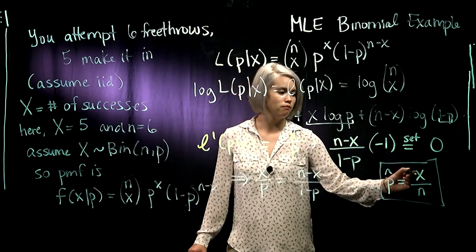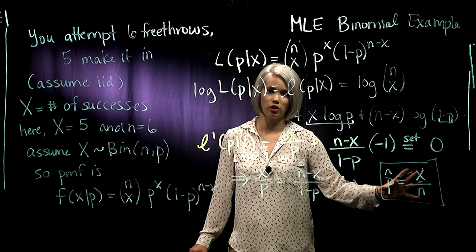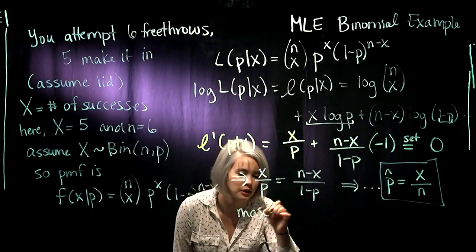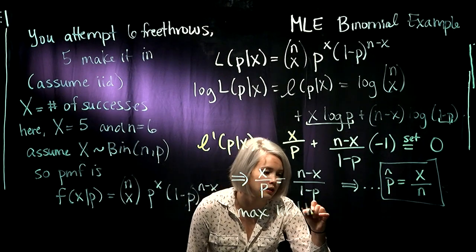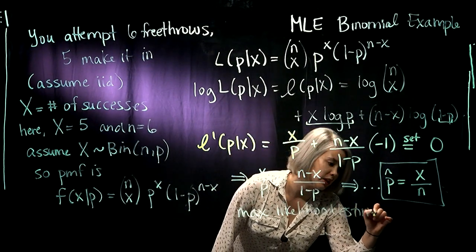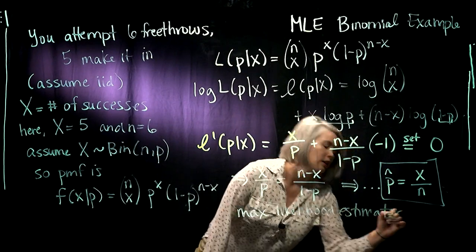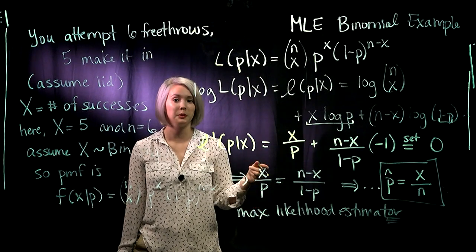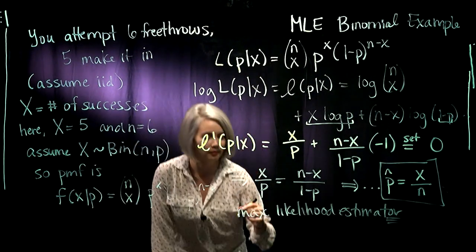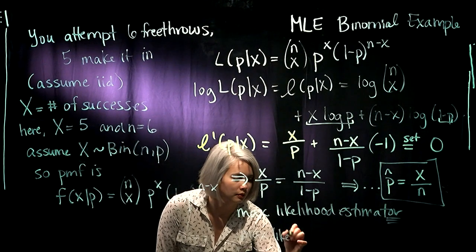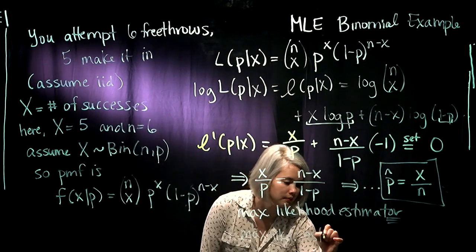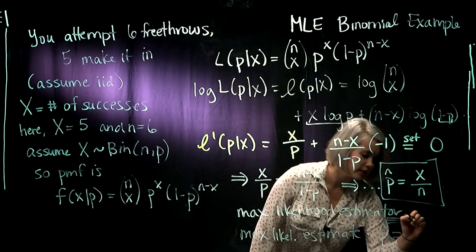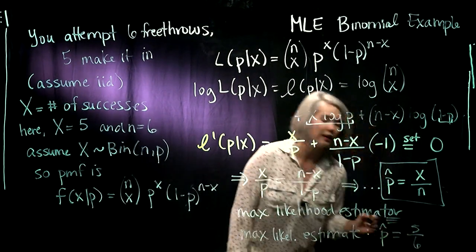When we have it in its general form where we have x and n like this, we call this our maximum likelihood estimator. And then when we actually plug in what our x is and what our n is, we call that our maximum likelihood estimate. So our maximum likelihood estimate here is five sixths.